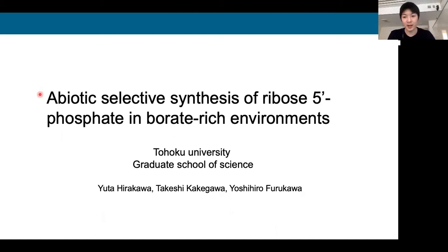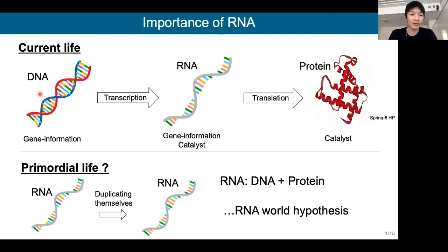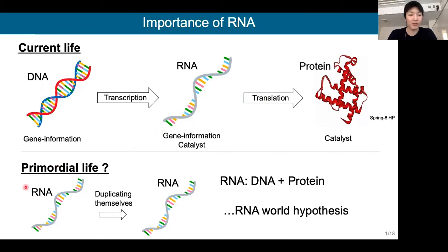My research interest is the origin of life and origin of nucleic acid. Current life uses two types of nucleic acid, DNA and RNA. DNA holds genetic information, RNA catalyzes the reaction to make protein, and protein works as biocatalysts in our body. RNA can store genetic information and catalyze the reaction, so some researchers think that primordial life used RNA as a gene storage and as a biocatalyst to duplicate themselves.